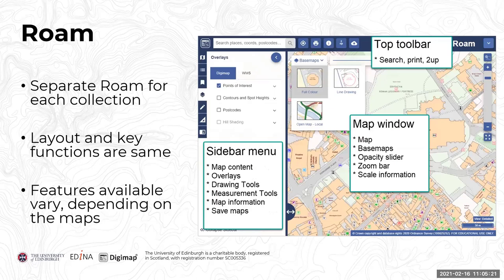This screenshot shows the Roam application — specifically the one in our Ordnance Survey collection. There is a separate Roam for each collection, but the layout and key functions are the same for every Roam. So once you've used one, you can easily navigate your way around the others.